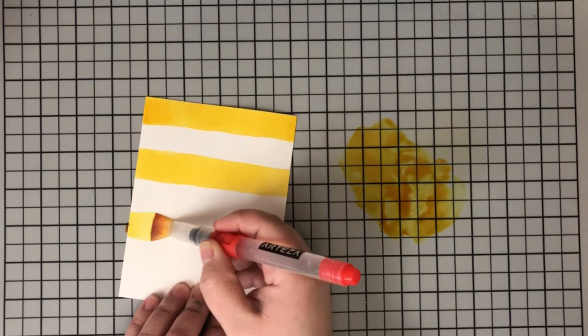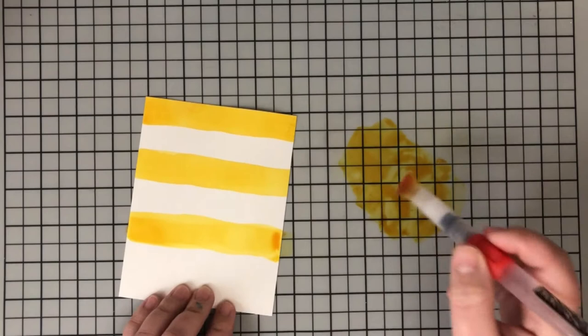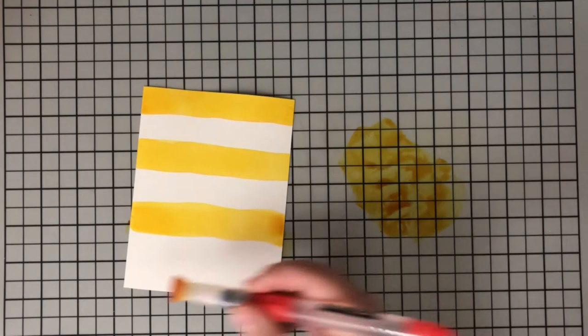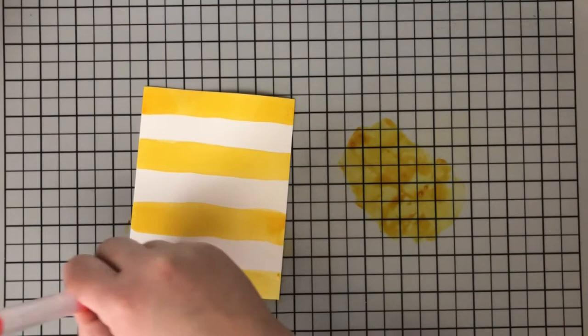I'm also using a very heavyweight cardstock here. This is 110 pounds, so it can stand up to a little bit of water and a little bit of dragging that brush across. You don't want to be too heavy-handed, but you need to make sure that you're using a heavyweight white cardstock. This won't work with anything thin, but this way it soaks into the paper, it gives me that vibrancy that I want, and it dries super quick.